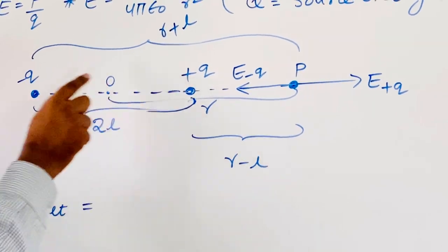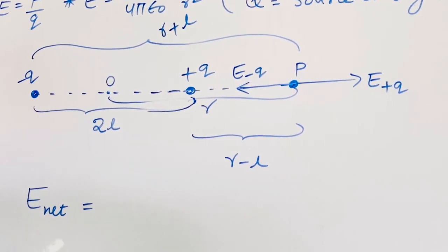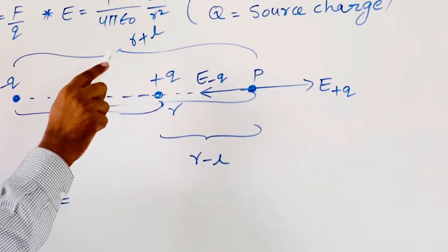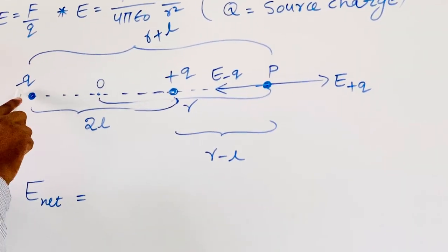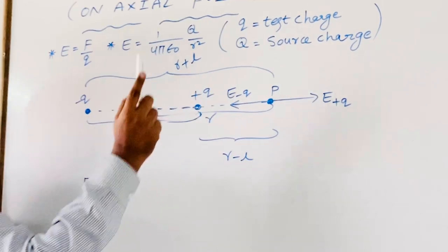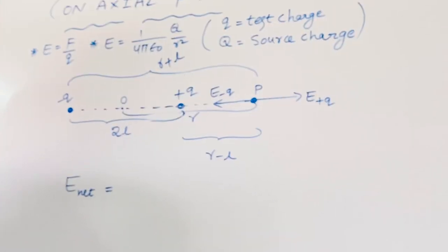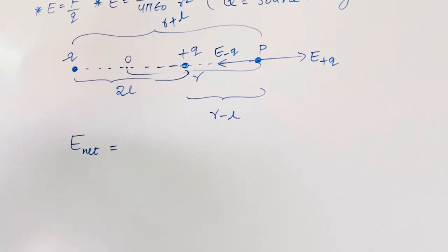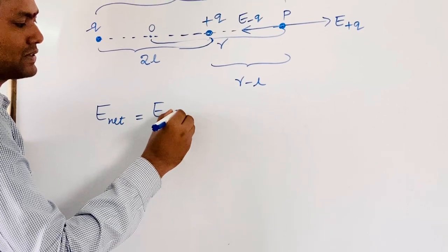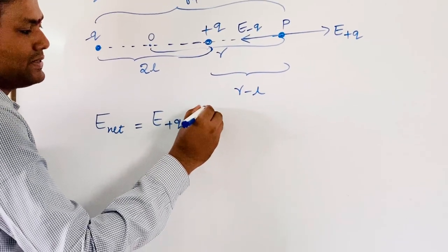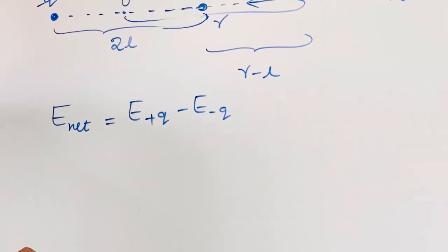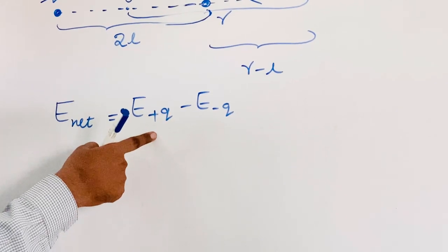Now we can calculate the net field at point P. Here plus Q and minus Q behave like source charges. The electric field due to charge plus Q we denote as E due to plus Q, and the electric field due to minus Q we denote as E due to minus Q. Since both electric fields are equivalent to each other, we use vector subtraction to find the resultant electric field at point P.